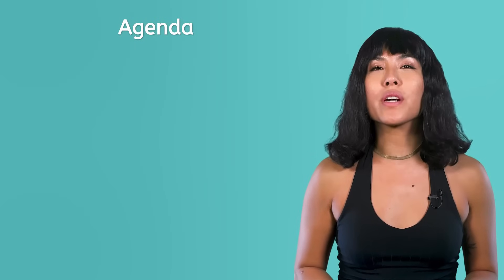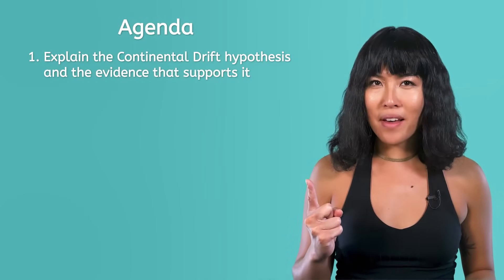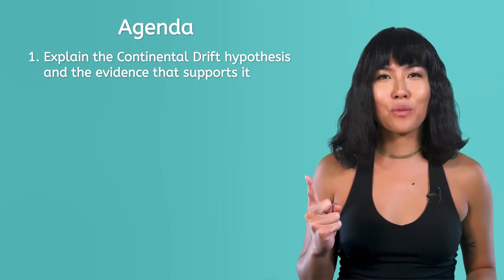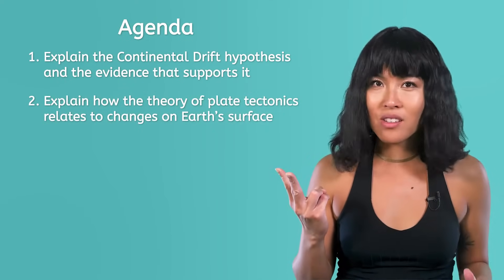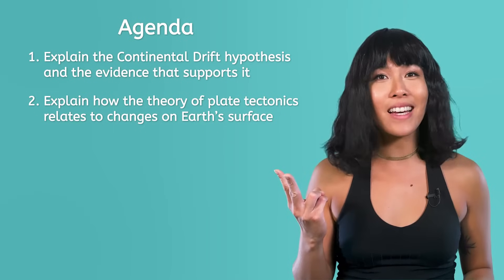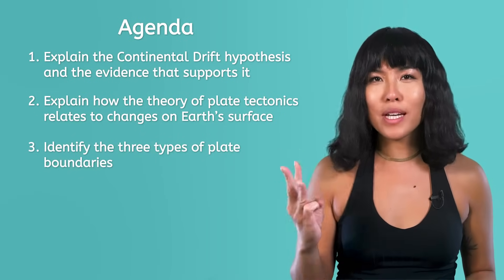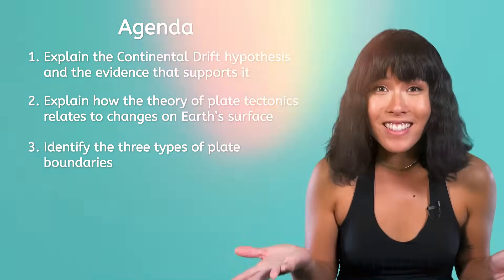I mean, how could something as big as entire continents just slide around? And if the continents have moved, then what did the world look like before? We're going to solve this puzzle together. In this lesson, we're going to explain the continental drift hypothesis and the evidence that supports it, explain how the theory of plate tectonics relates to changes on Earth's surface, and identify the three types of plate boundaries. Let's get started!